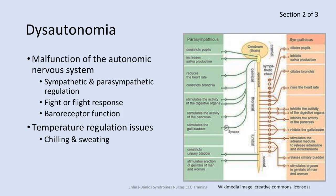In the parasympathetic system, it's just the opposite. You have increased digestion, constricted bronchioles, and the bladder sphincter relaxes. Your heart rate slows. You have an increase in tears and saliva. Your constrictor muscles in your eyes are stimulated so your pupils are able to constrict, your close vision becomes sharper, and you just relax in general — hence the term rest and digest.